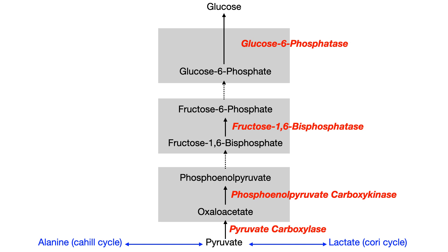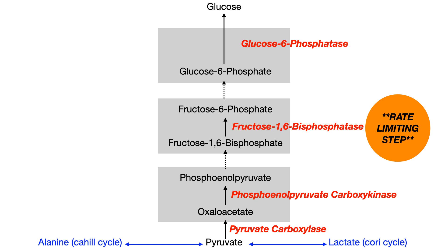Big picture: lactate or alanine — along with other precursors — can be converted into pyruvate, which can then go all the way back up to glucose to power the cell and make more ATP. For USMLE or COMLEX, what you absolutely need to memorize — the most important thing in this video — is that fructose 1,6-bisphosphatase is the rate-limiting step of gluconeogenesis.